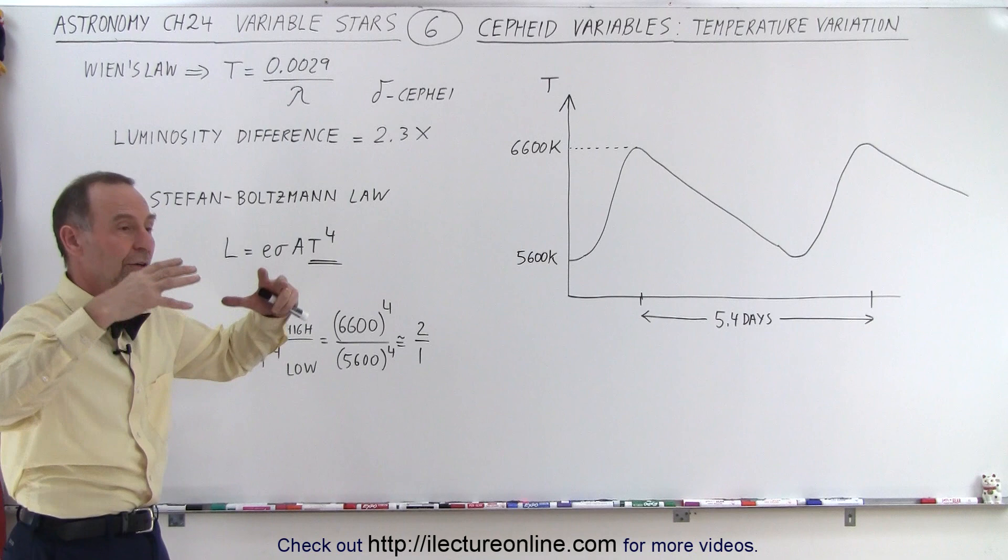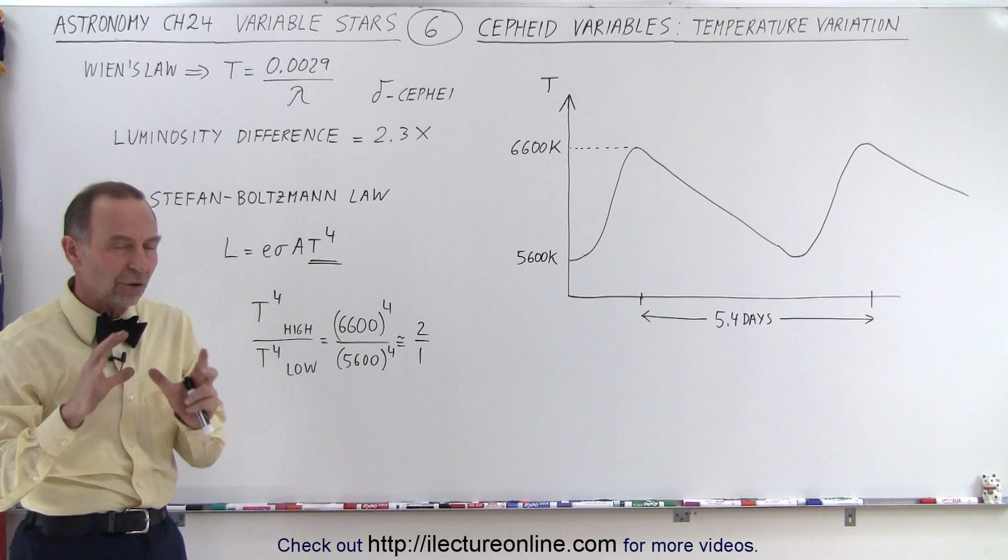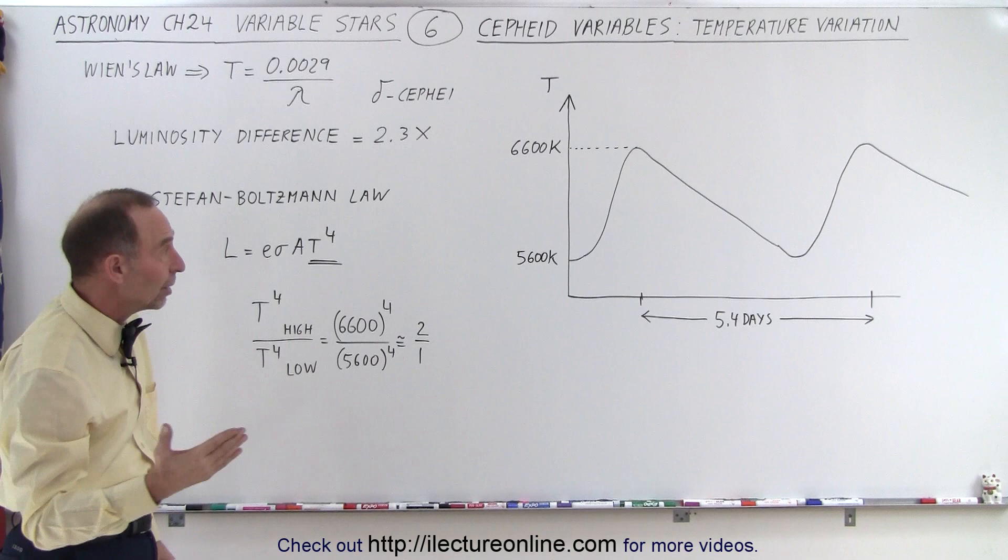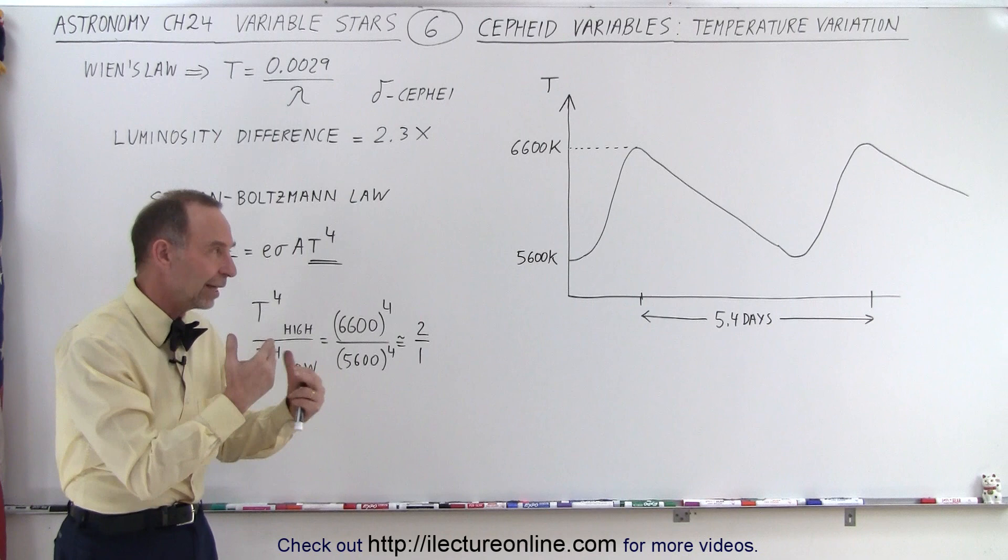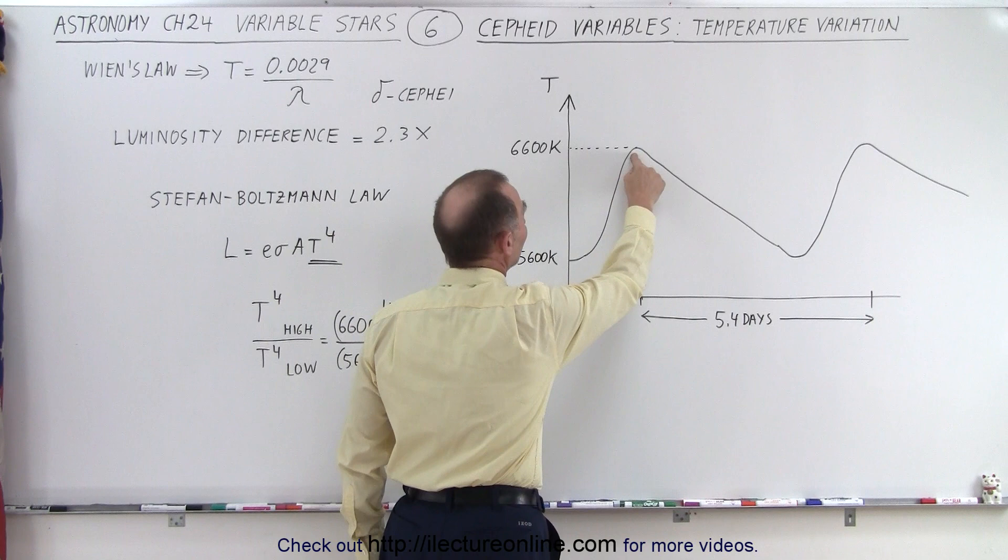We also realize that the surface area of the star changes because we know the star gets bigger and it gets smaller, it gets bigger, it gets smaller. So we'll take a look at that one next, but slowly we can see that the variation in the luminosity is due in large part to the difference in the temperature of its surface as it goes through the cycle, and in second part we'll also see that it's due to the size difference as it goes through the cycle. So we'll have to line that up with how it changes in brightness.